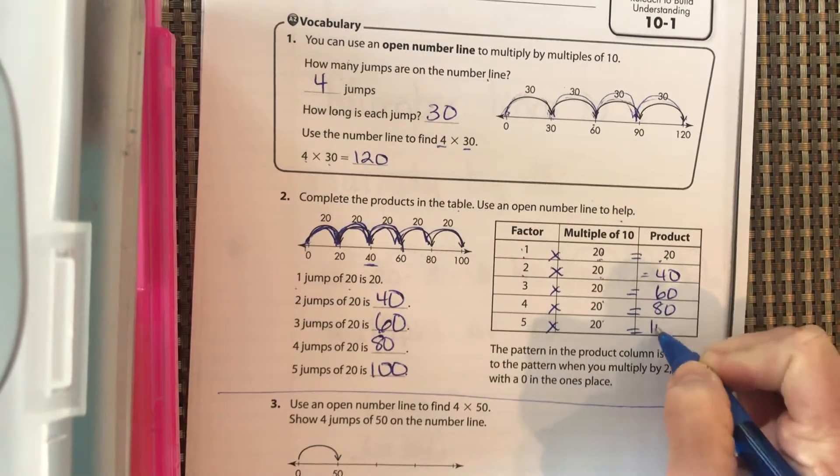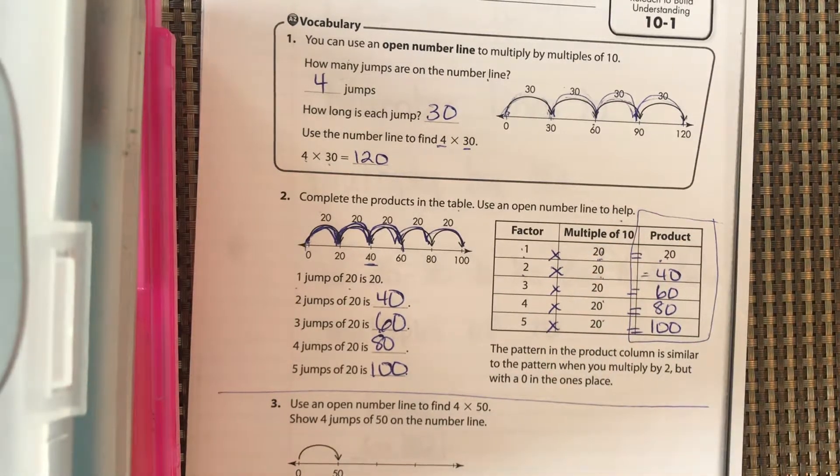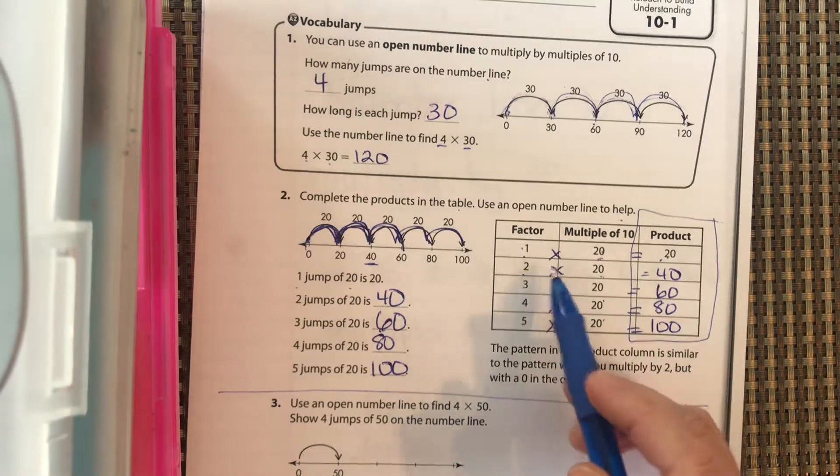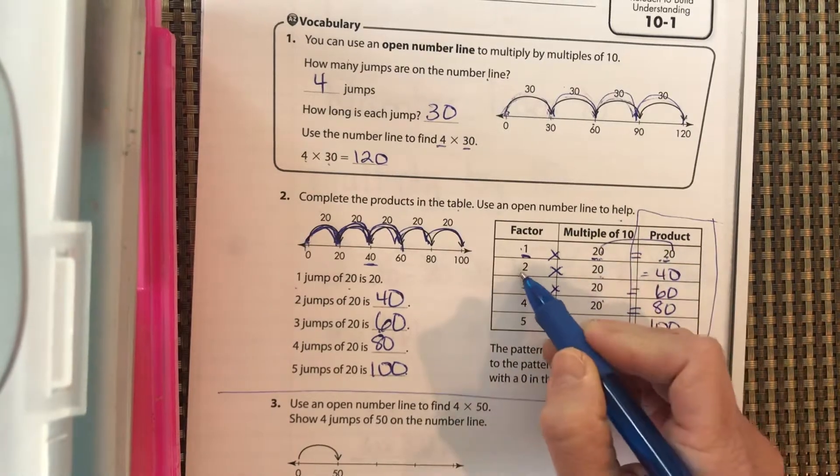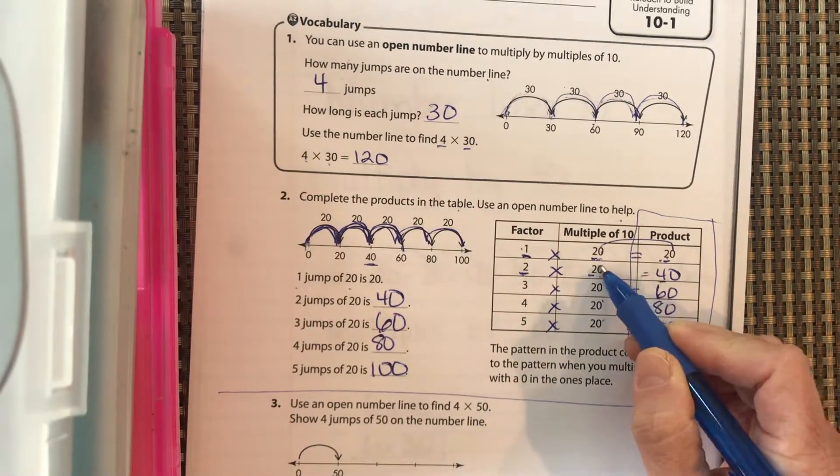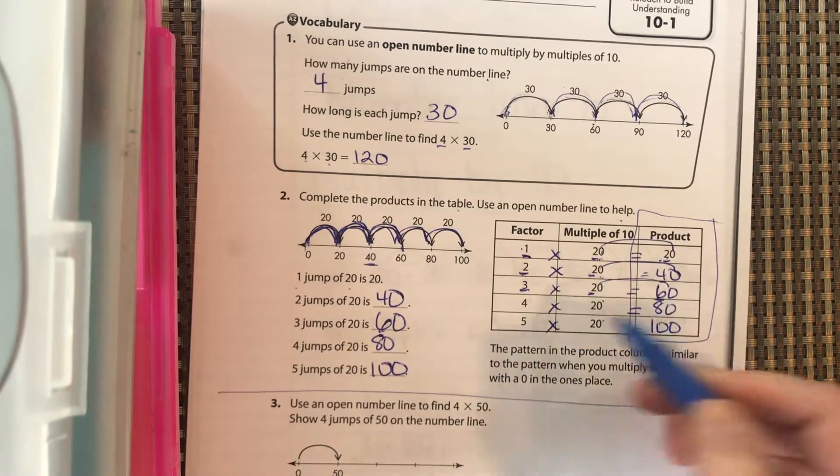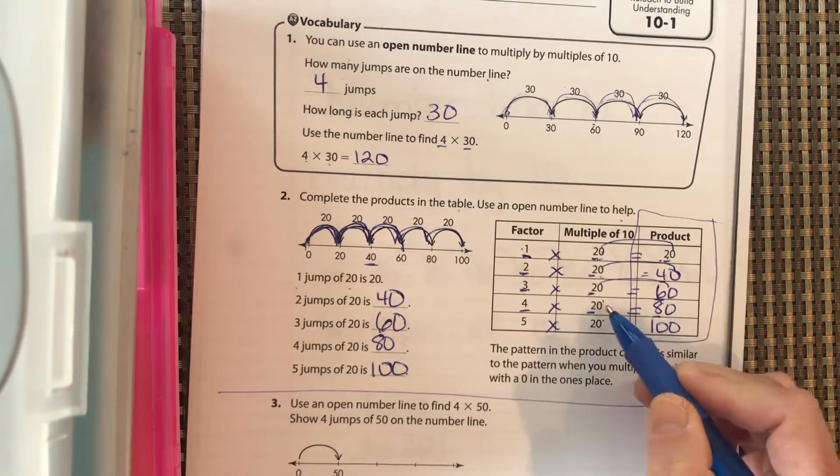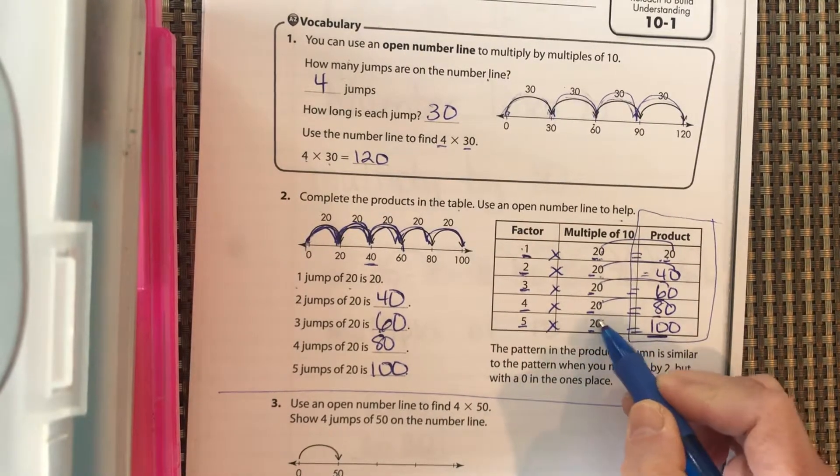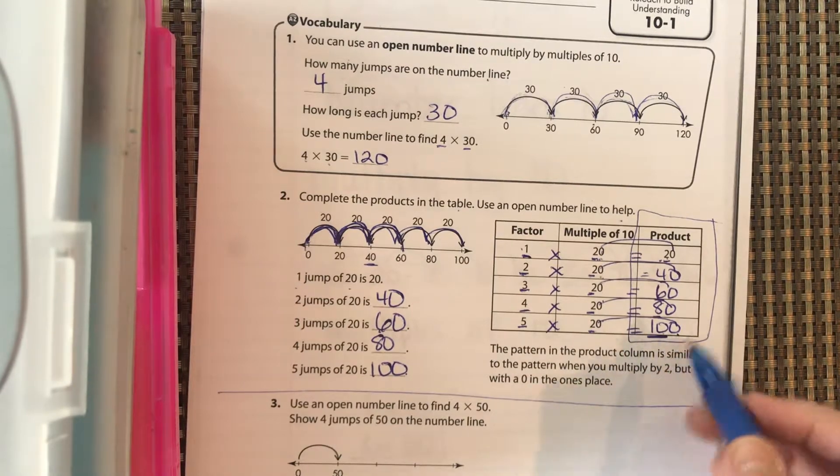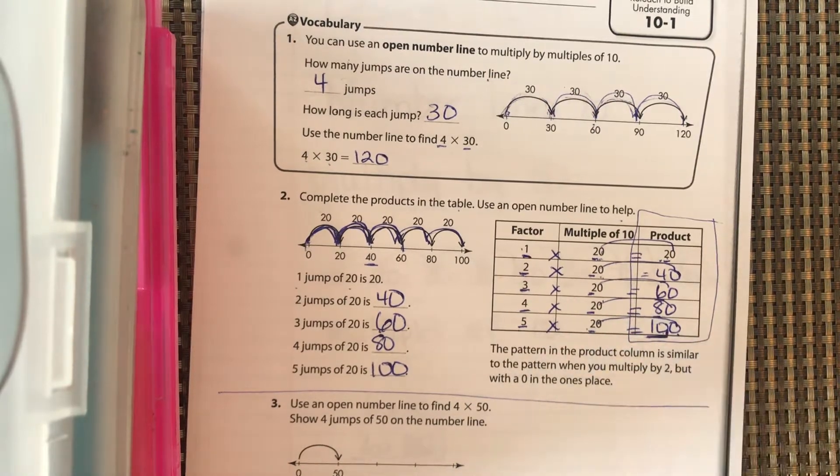So we get 60, 80, 100. The pattern in the product column is similar to when you multiply by 2, right? 1 times 2 is 2, but with a 0 afterwards. 2 times 2 is 4, but with a 0 after it. 3 times 2 is 6, but with a 0 after it. 4 times 2 is 8, but with a 0 after it. 5 times 2 is 10, but with a 0 after it. Don't get confused at the fact that there's two 0s. 5 times 2 is absolutely 10, not just 1. And then you have to bring another 0 over.